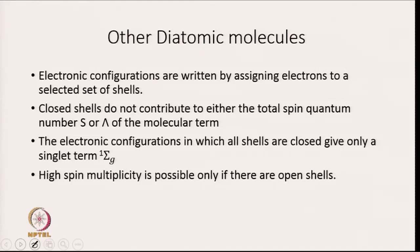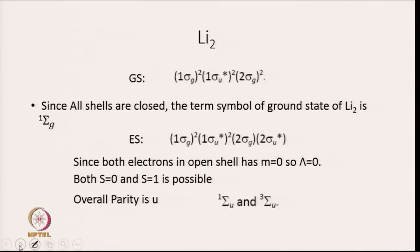For example, Li₂ in the ground state has 2 electrons in 1σ_g, 2 electrons in 1σ_u*, and 2 electrons in 2σ_g. All shells are closed, so the term symbol of the ground state of Li₂ is ¹Σ_g. High spin multiplicity is only possible if there are open shells.